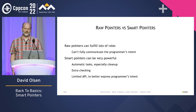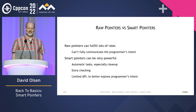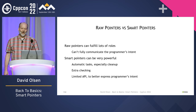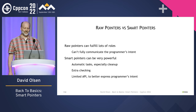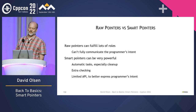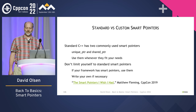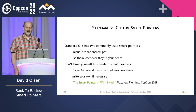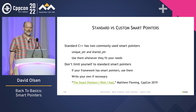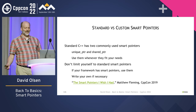Raw pointers are very powerful — too powerful, in fact. Because they can do so many different things, it isn't clear which of those things you want a particular pointer to do. While not a panacea, smart pointers can help — they can automate certain tasks such as cleanup, and they can limit the API to a certain role so that the programmer's intent for this particular pointer is more clear. Standard C++ has two commonly used smart pointer types: unique_ptr and shared_ptr. Use them whenever they fit your needs, but please don't limit yourself to the standard smart pointers. If the codebase you are working in has smart pointers that behave correctly, go ahead and use them. And don't be afraid to write your own smart pointers if you can't find any existing one that fits your needs.